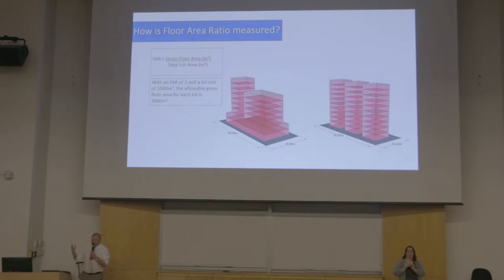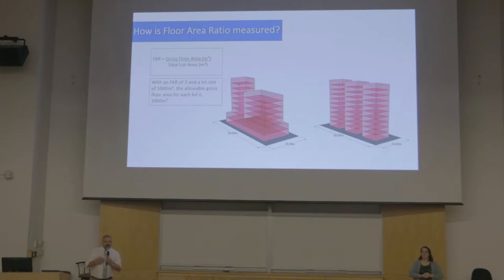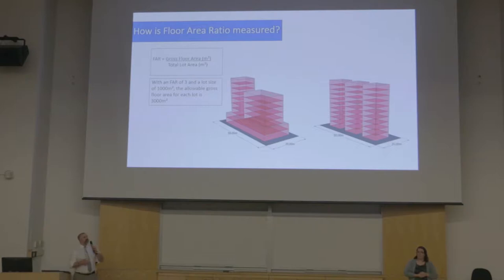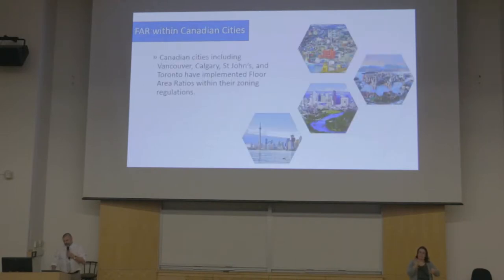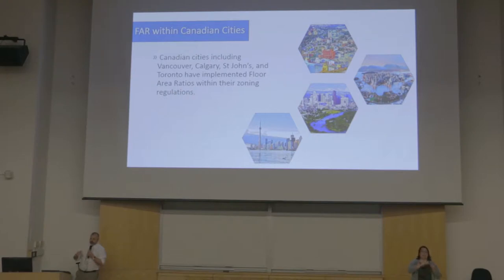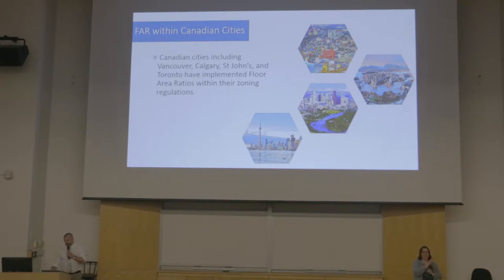To show a couple of larger buildings: an FAR of three can be achieved on a site with or without a podium. On a 50-meter by 20-meter site, both of these buildings, although they hit the ground in different ways, would have the same floor area ratio. Canadian cities including Vancouver, Calgary, St. John, and Toronto have all implemented FAR within their zoning regulations for mixed-use areas and for large multi-residential buildings.